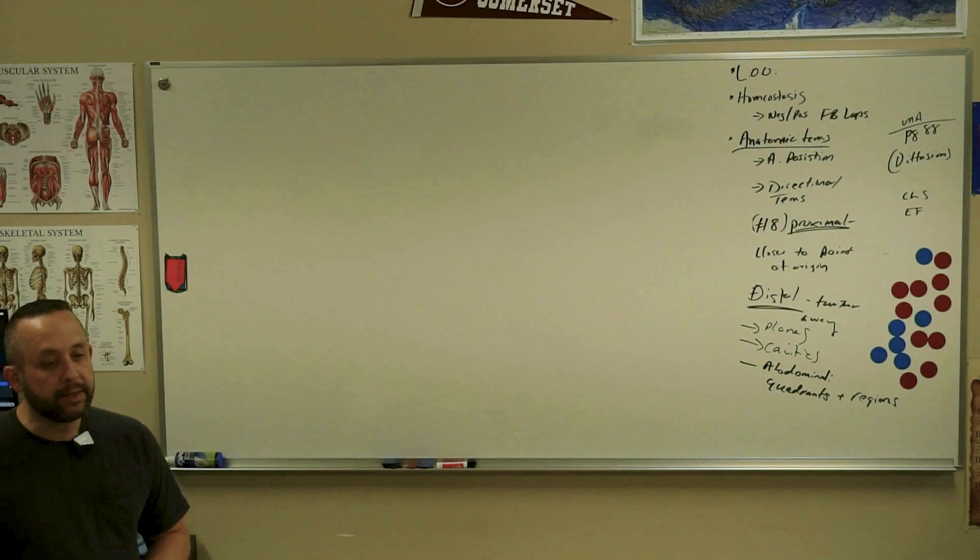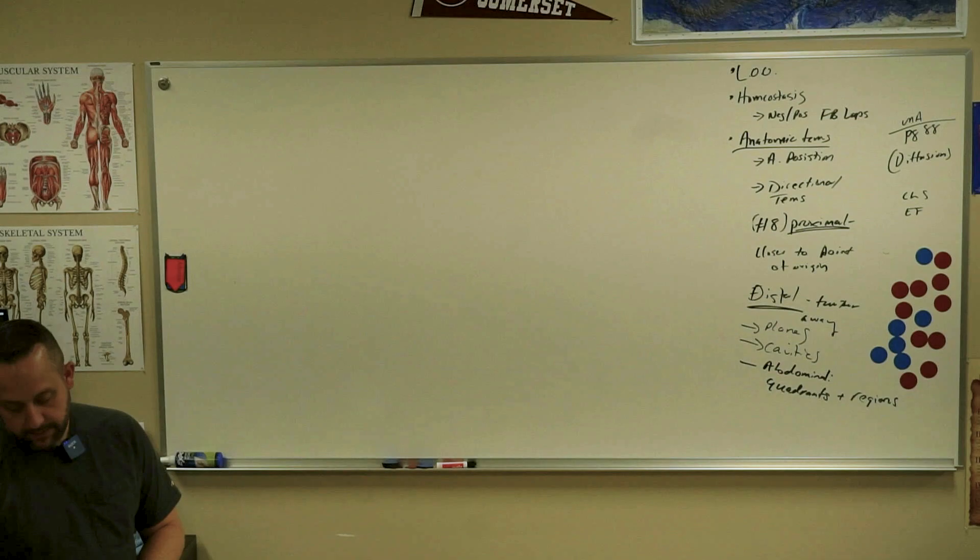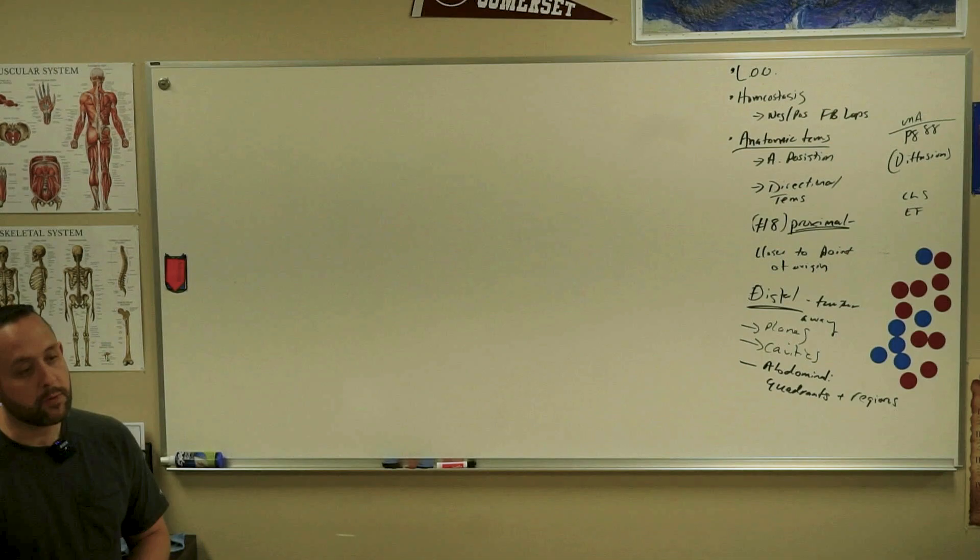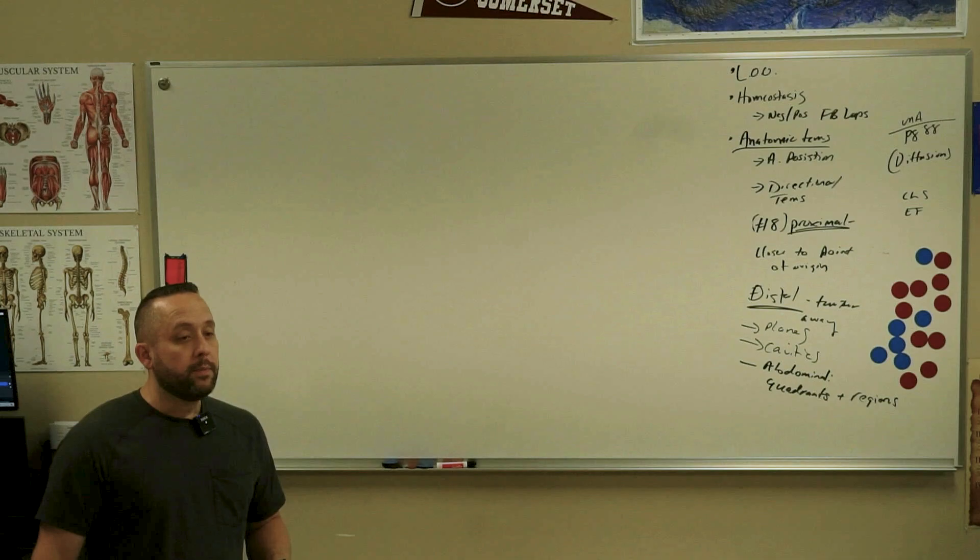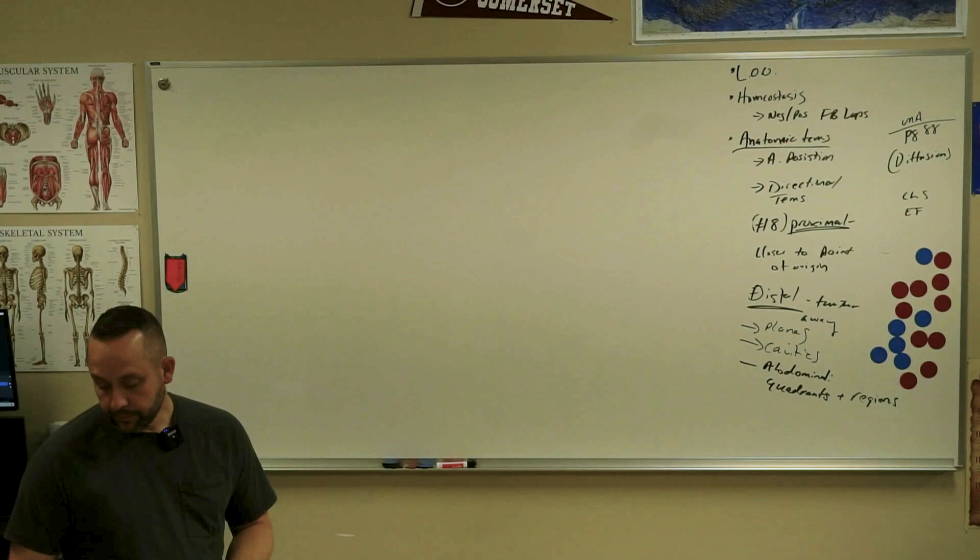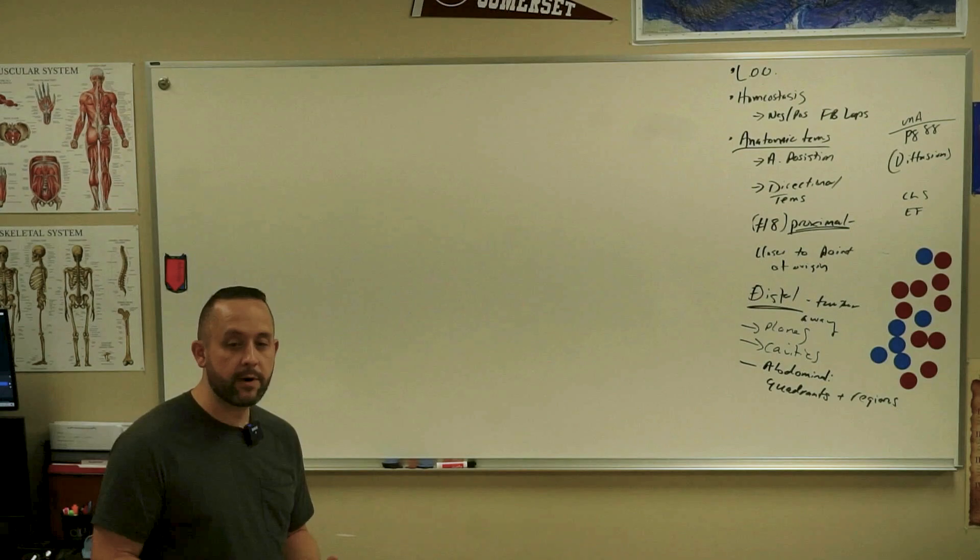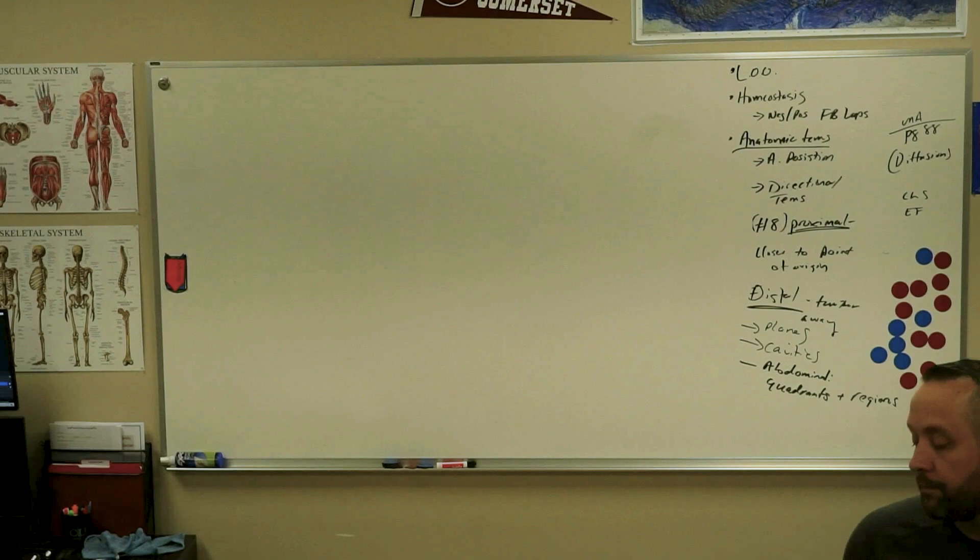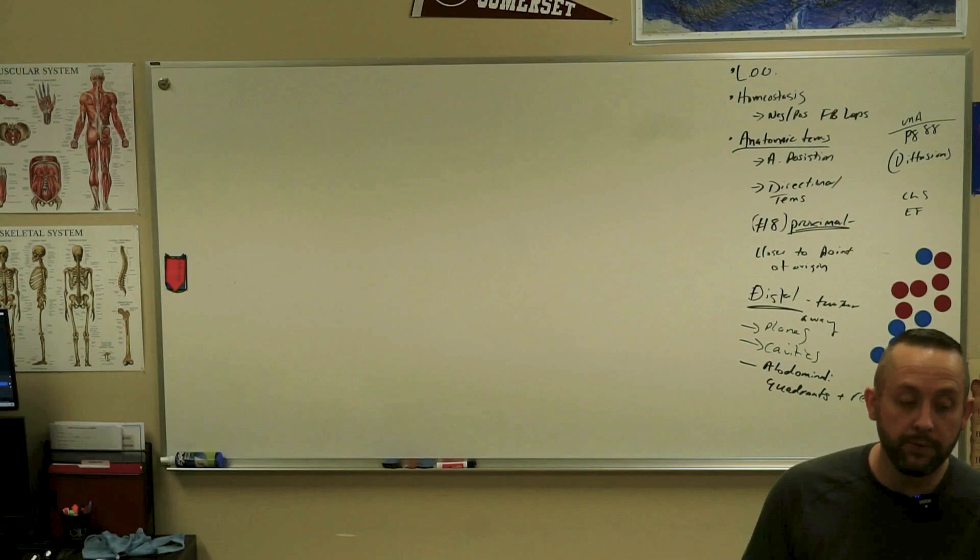Everybody should be finding the endocrine system page in chapter six, page 89. We won't get to this today, but before I see you again, you want to make sure to be reviewing pages 90 and 91. Look at all these hormones here. Growth hormone, insulin, glucagon, ACTH, TSH. It's a lot of acronyms and stuff to memorize.